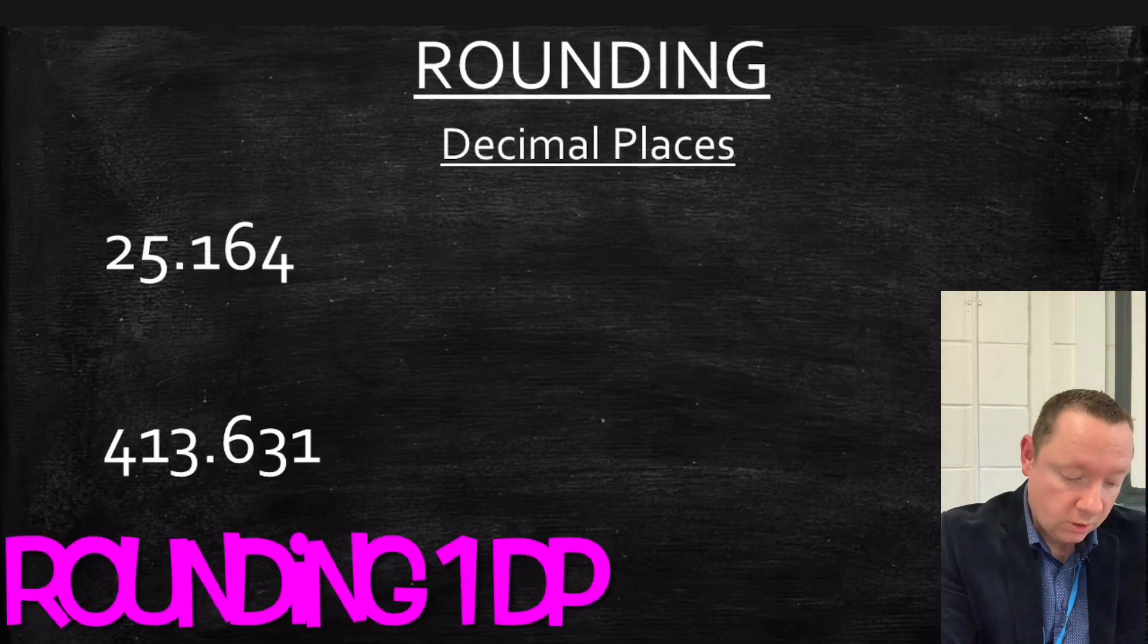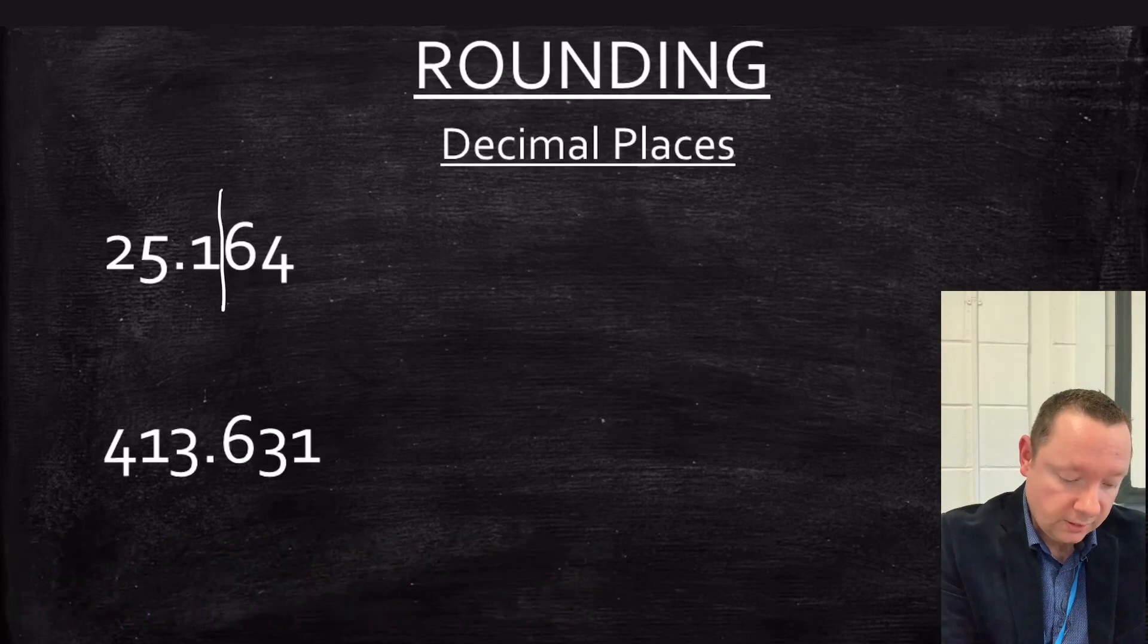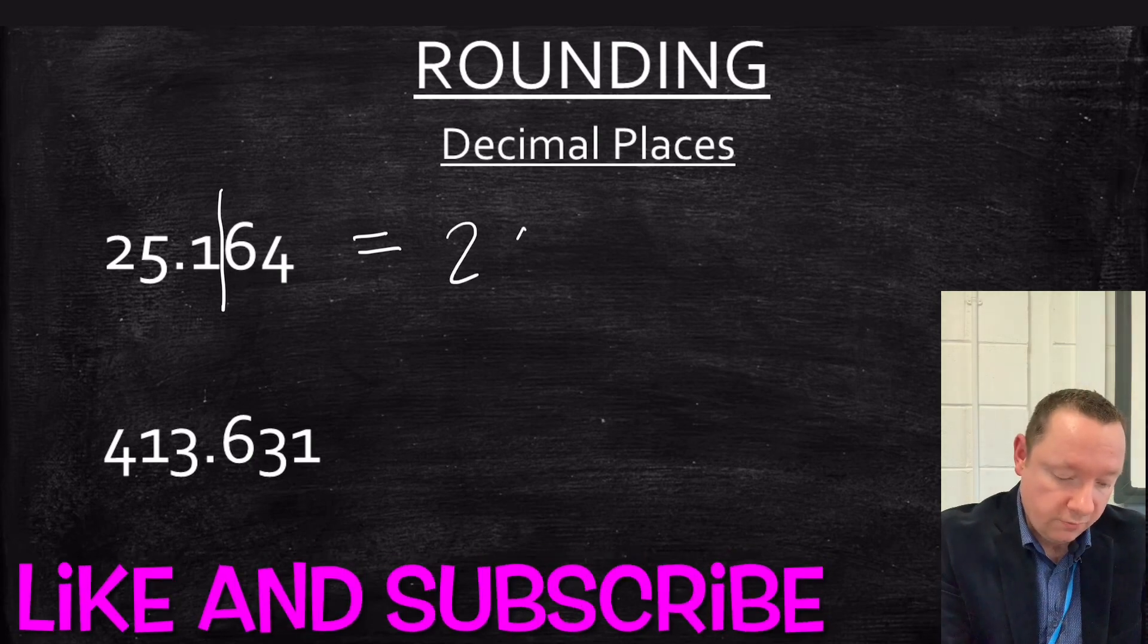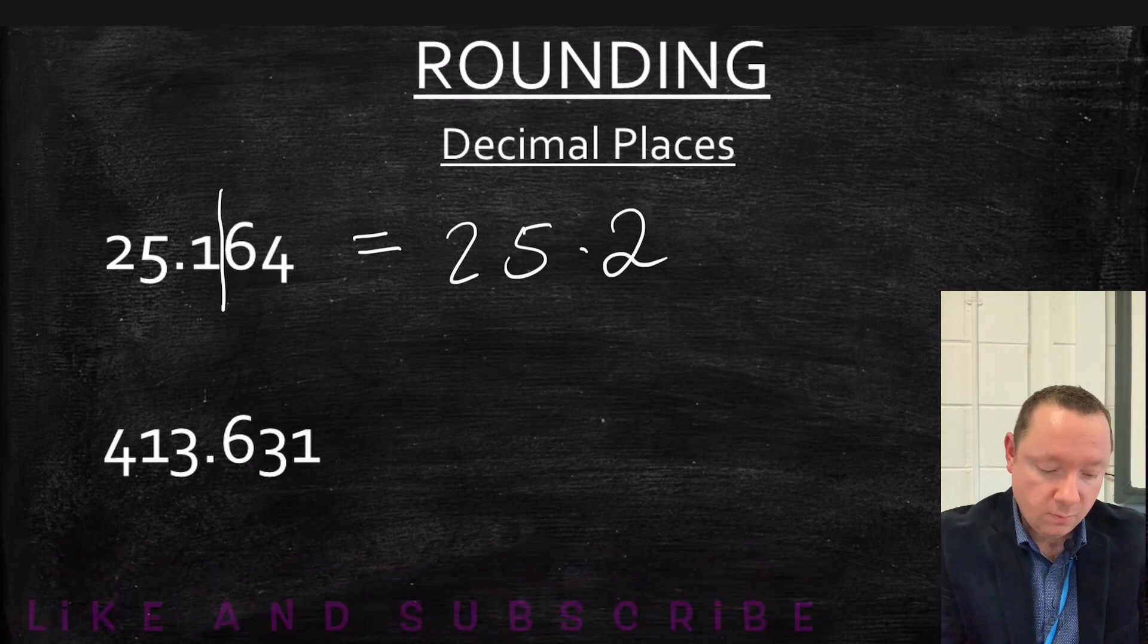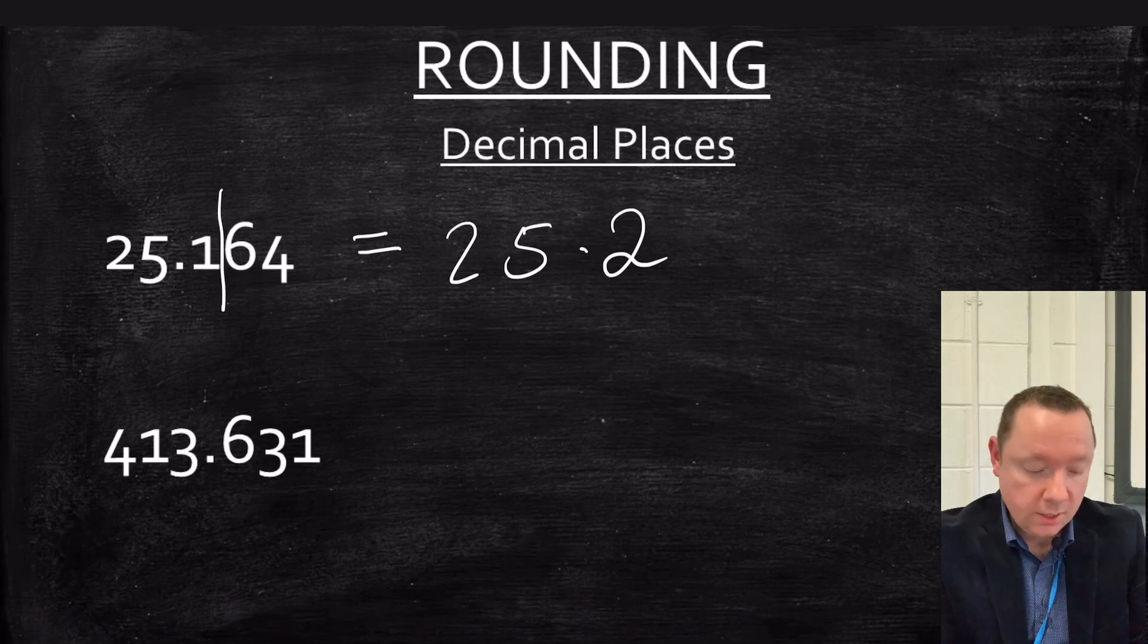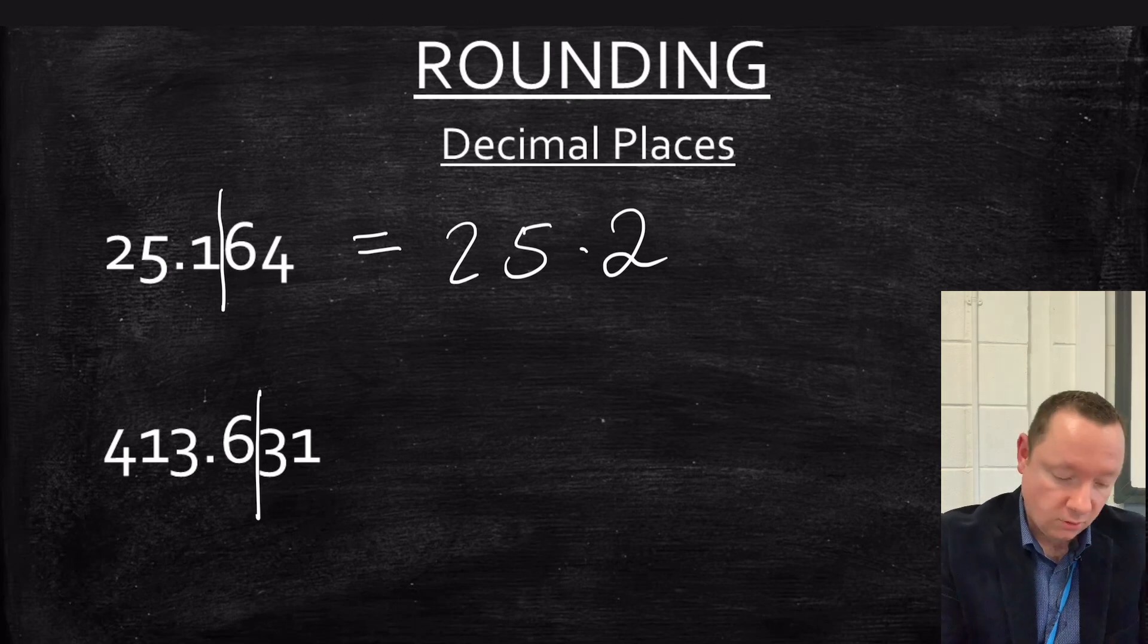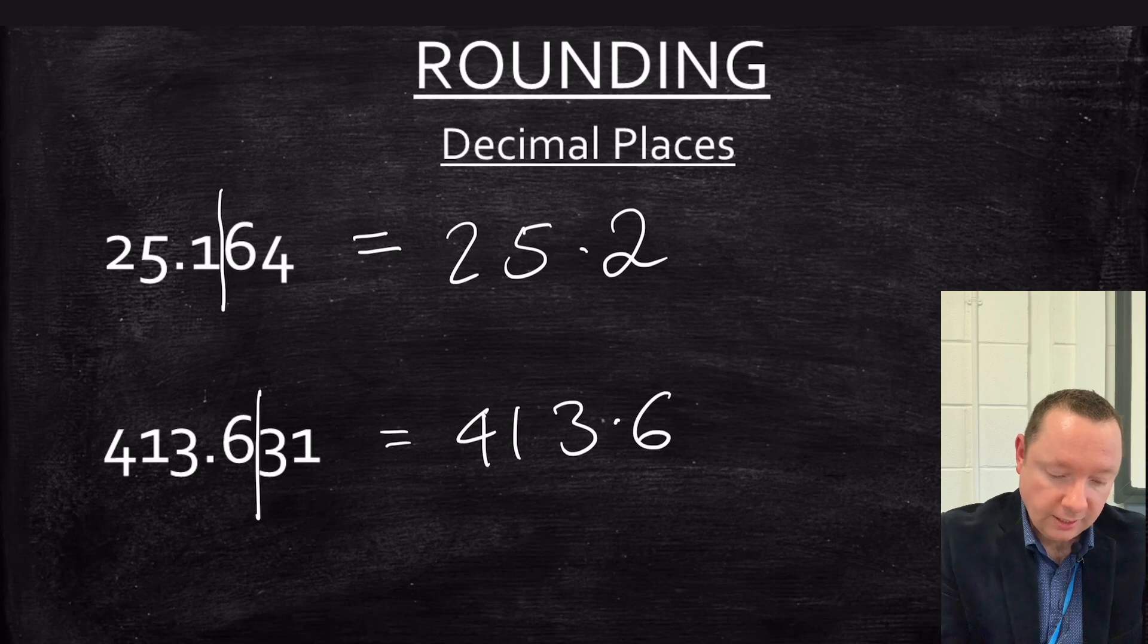If it was to one decimal place, we would round after the first decimal place, so we need to cut here. The six tells me I need to round up, so it would become 25.2. And for the second one, I need to round after the first decimal place, so I need to cut here, and the three tells me I need to round down, so I get 413.6.